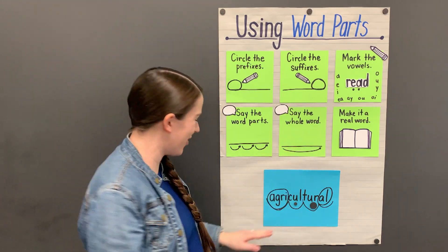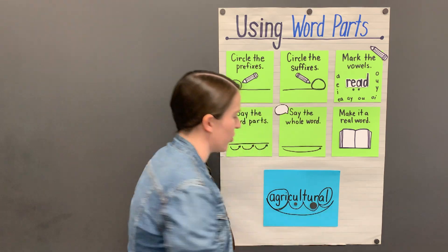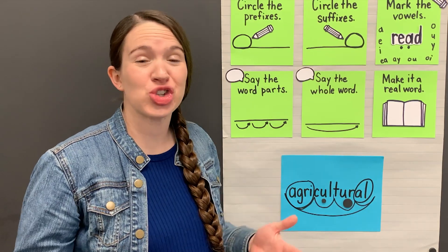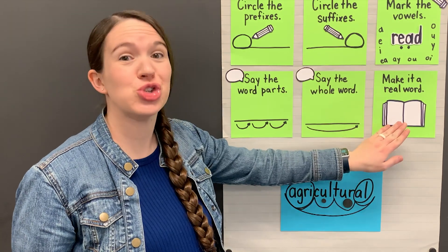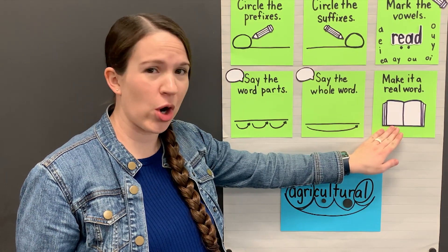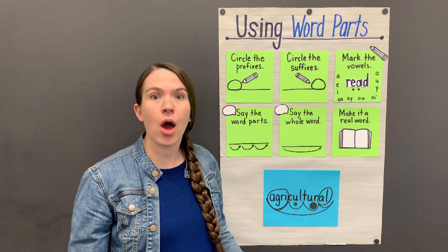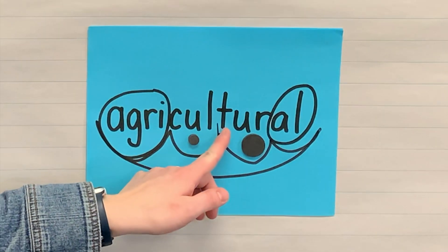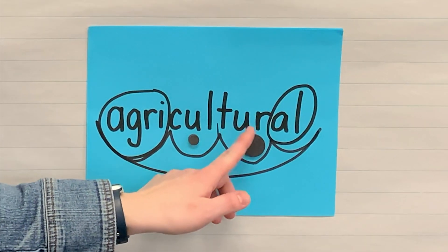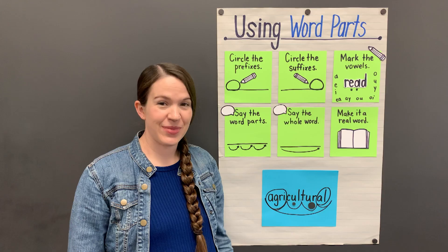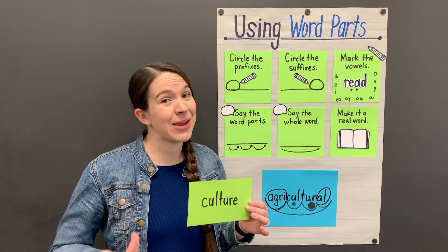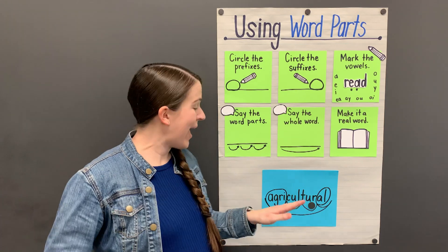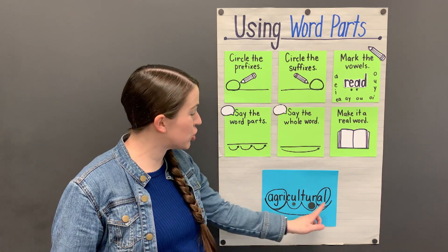Let's say the word parts: 'agra - cul - tur - al.' Now let's say the whole word: 'agricultural.' Is that a real word? Not quite. Let's try some different letter sounds to make it a real word. Oh — 'agricultural.' Sometimes the 't' says 'ch' when followed by a 'u.' 'Culture' sometimes means raising plants or animals.